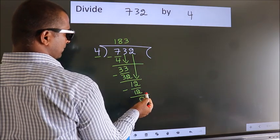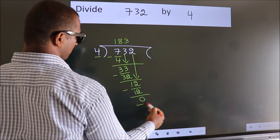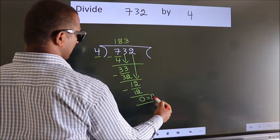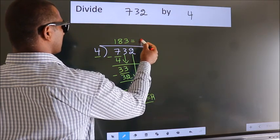No more numbers to bring it down. So we stop here. This is our remainder. This is our quotient.